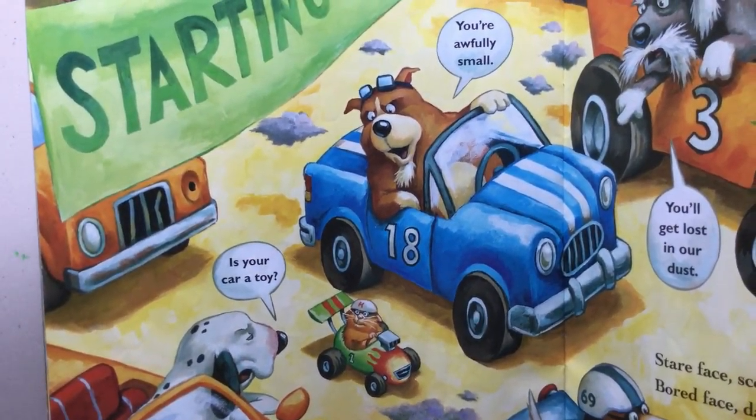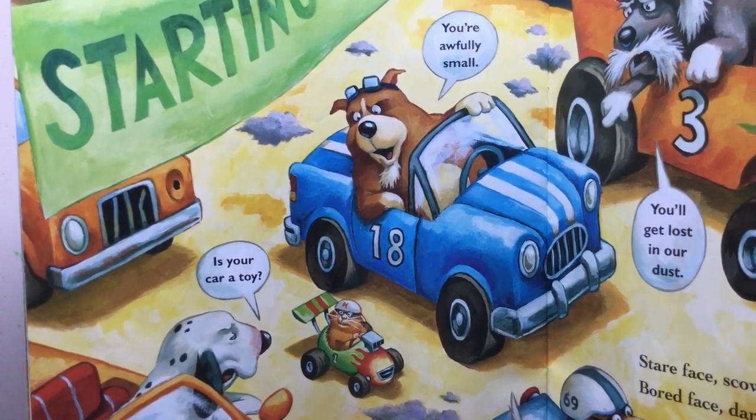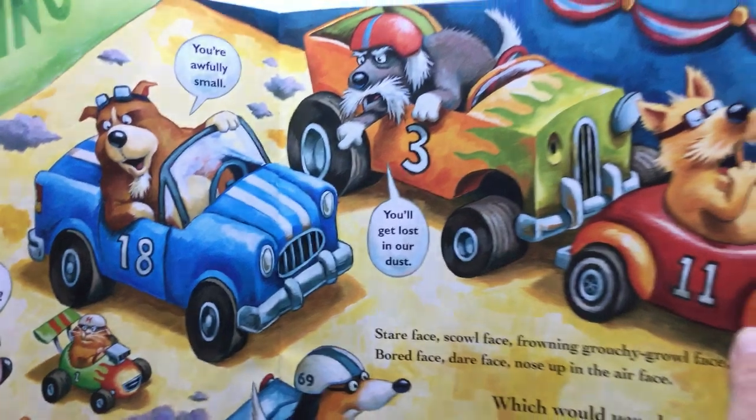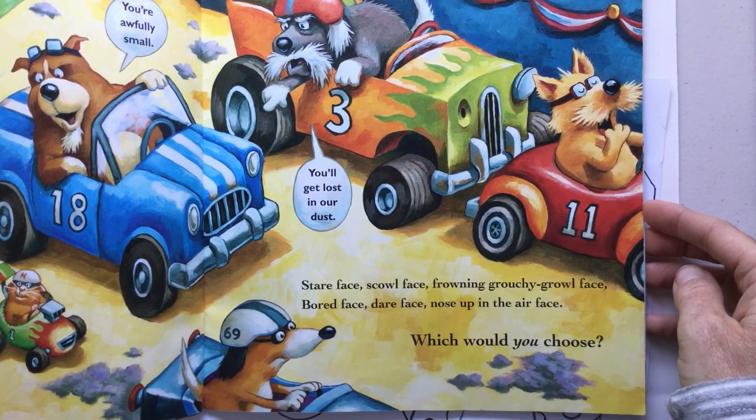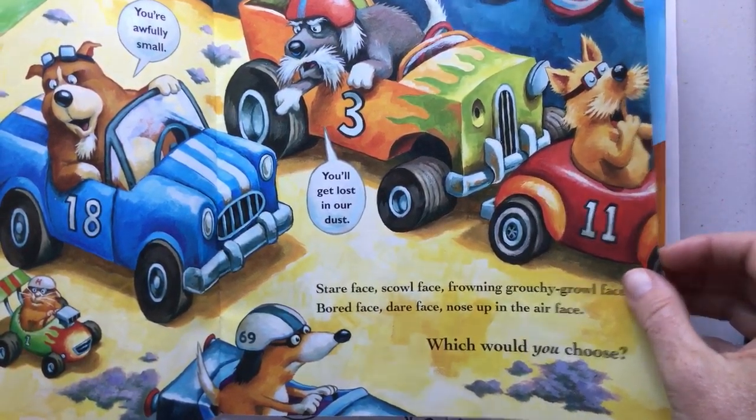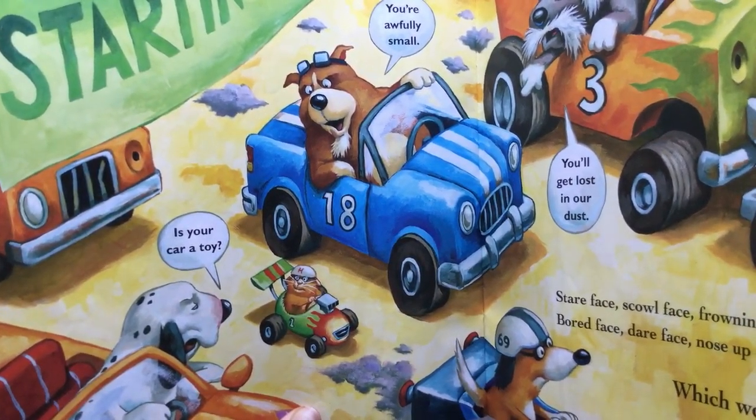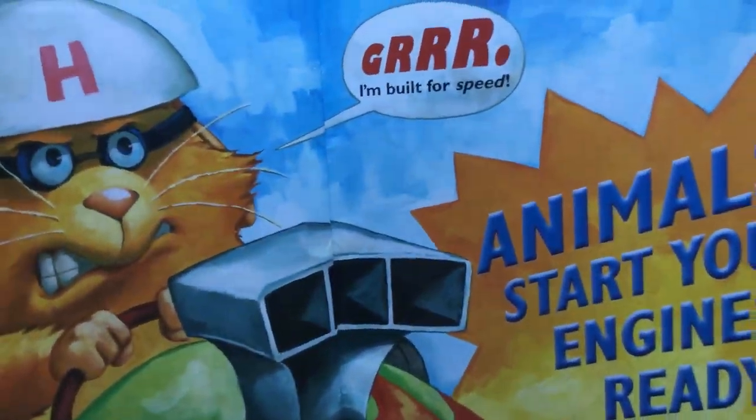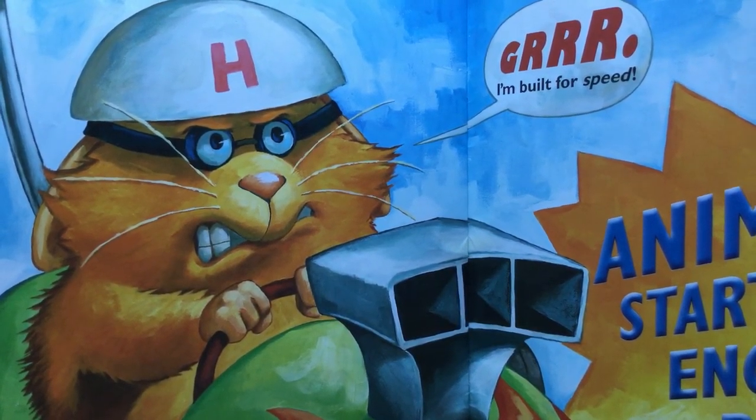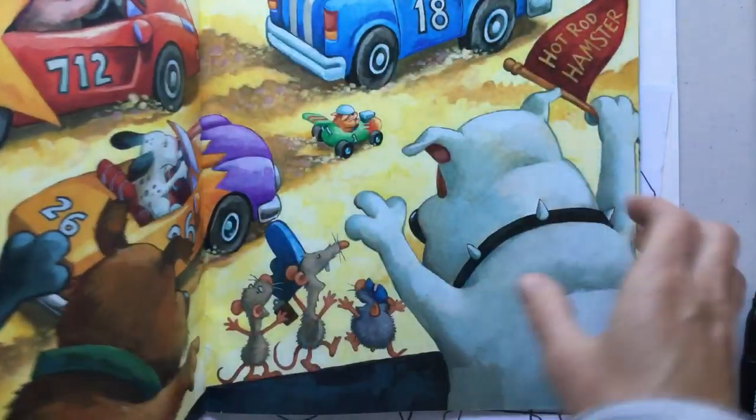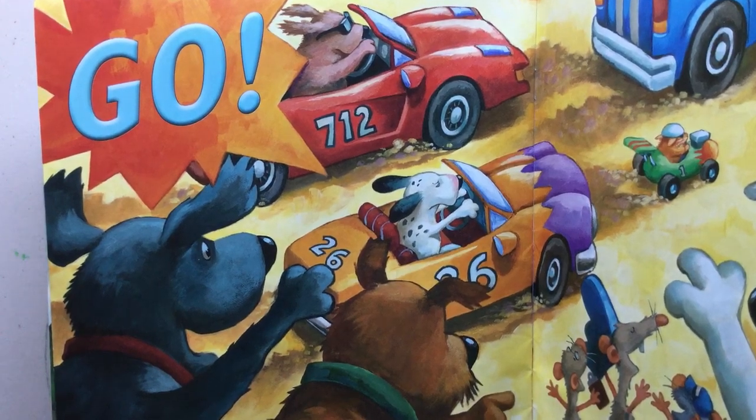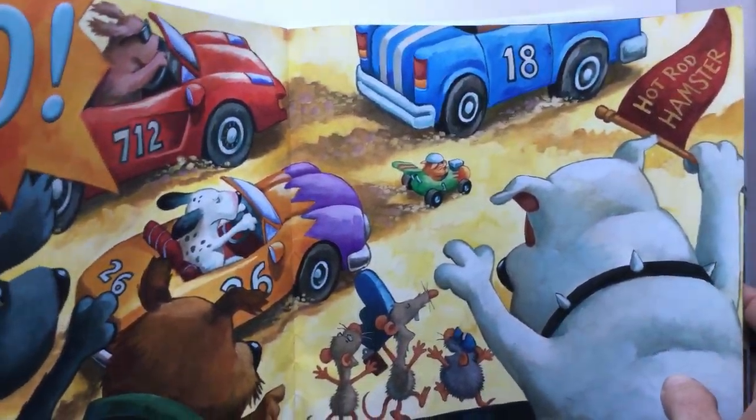Now I'm ready to roll. All right, let's see how the race goes for Hot Rod Hamster. Is your car a toy? You're awfully small. You'll get lost in our dust. Steer face, scowl face, frowny, grouchy, growl face, bored face, deer face, nose up in the air face. Which would you choose? Which face would you make if you were getting ready for your race? Grr, I'm built for speed. He made a growl face. Animals, start your engines. Ready, set, go. Here's a little Hot Rod.